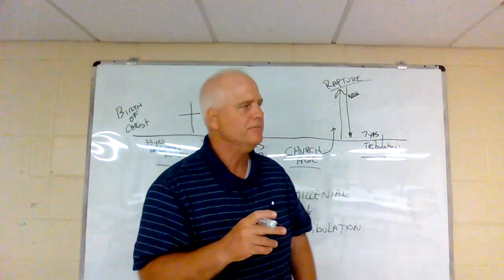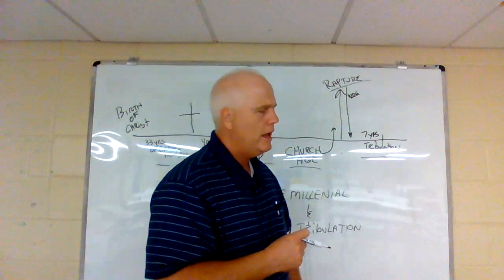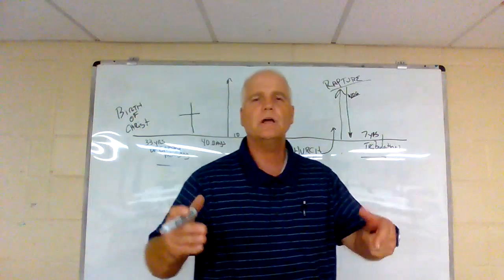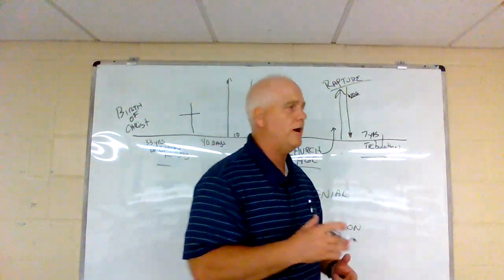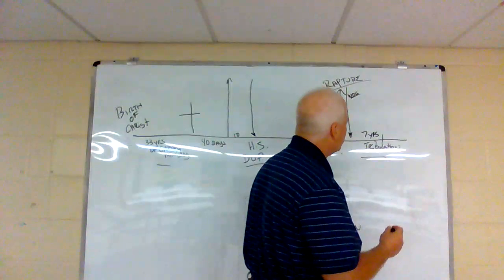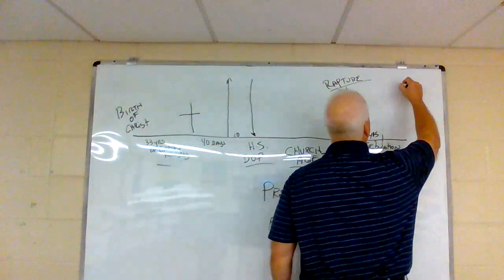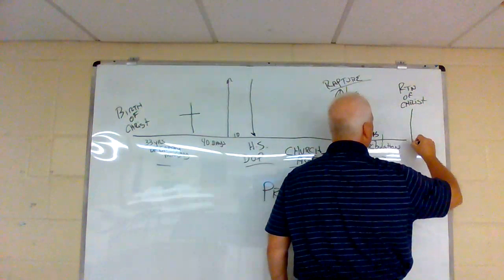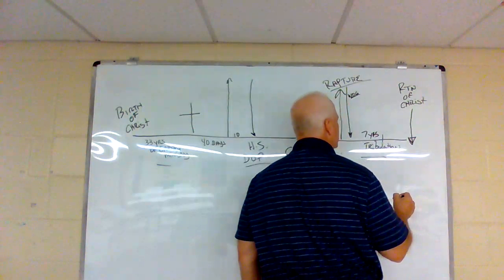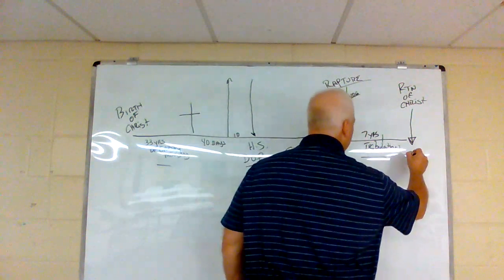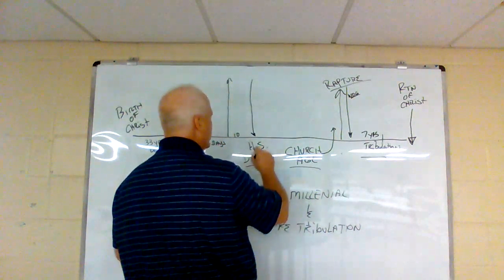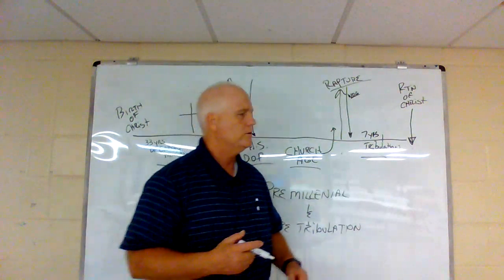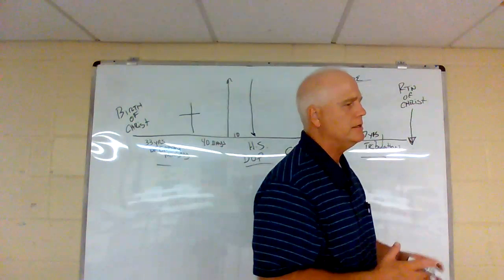Revelation 17 and 18 are extremely important chapters. Read those chapters together and you will see there are two beasts: the beast that comes out of the sea, meaning the sea of humanity, being the Antichrist; and the beast who rises out of the earth, who is the false prophet. When we get to chapter number 19, that is the return of Jesus Christ. He comes back down to earth in the same place — the Mount of Olives, where he ascended from — Zechariah chapter 14.